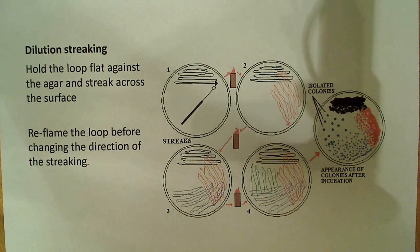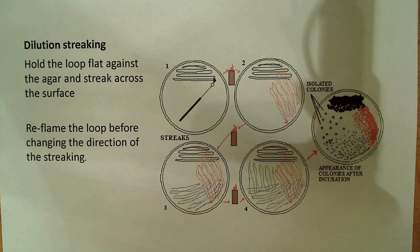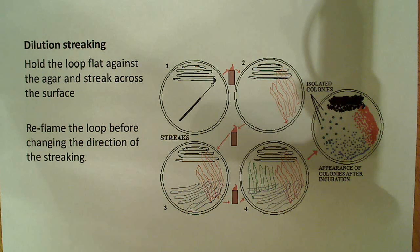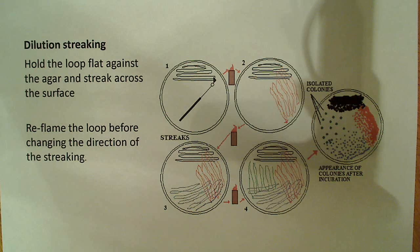The last thing I want to talk about is the process of dilution streaking. This is an important technique because it's one of the main ways you're going to separate bacteria in culture. Say you're given a liquid culture and you need to transfer it to MacConkey medium because you have a mix of gram-negative and gram-positive bacteria and you want to select for the gram-negative. What you're going to do is sterilize the loop first — that's what the flame is for — heat it up, get it red-hot, wait a couple of seconds, dip it into the liquid culture, and begin streaking.